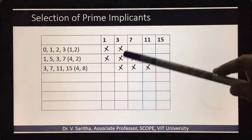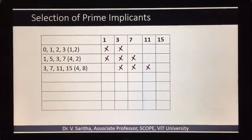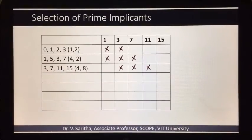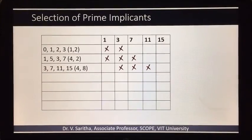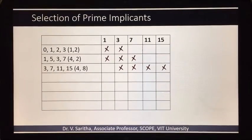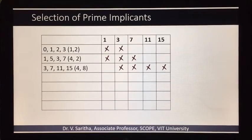Similarly 1,5,3,7: 1,3,7 are min terms and 5 is the don't care condition so we leave it. In the case of 3,7,11,15: 3,7,11 and 15 are min terms so we are marking them.